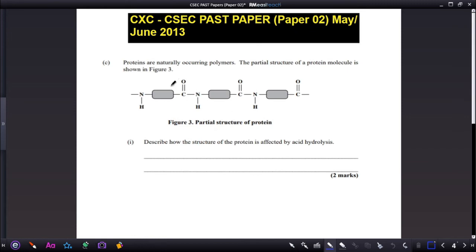The next part of the question: proteins are naturally occurring polymers. The partial structure of a protein molecule is shown in figure 3. They want you to describe how the structure of the protein is affected by acid hydrolysis. It's two marks, so we can give two pointers. The first pointer is that the peptide bonds are cleaved.